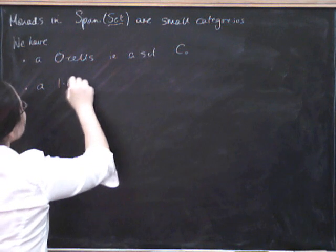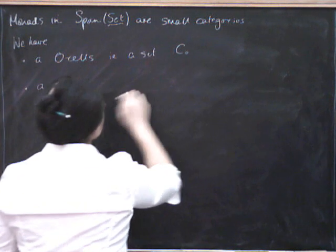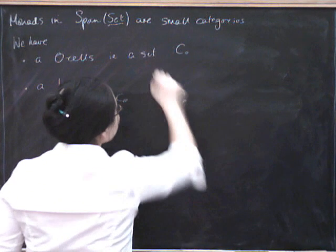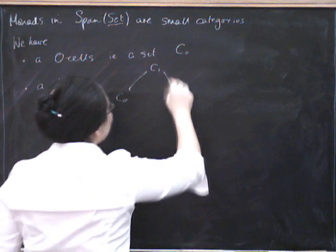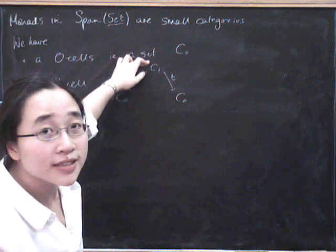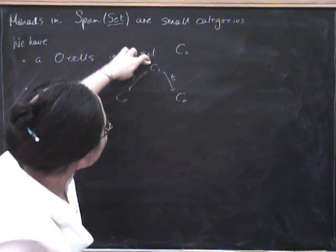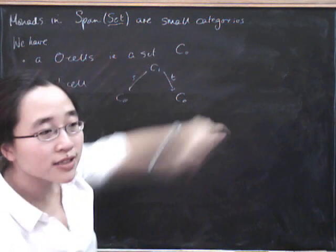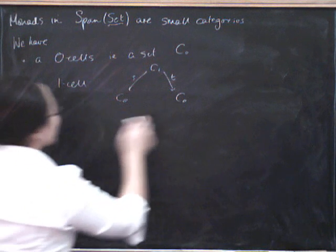We've got to have a one cell from C0 to itself. So we've got to have a span like that. That's already looking quite promising, right? Because this can be our set of morphisms, and this is the source function, and that's the target function, giving us the source and target for each morphism.